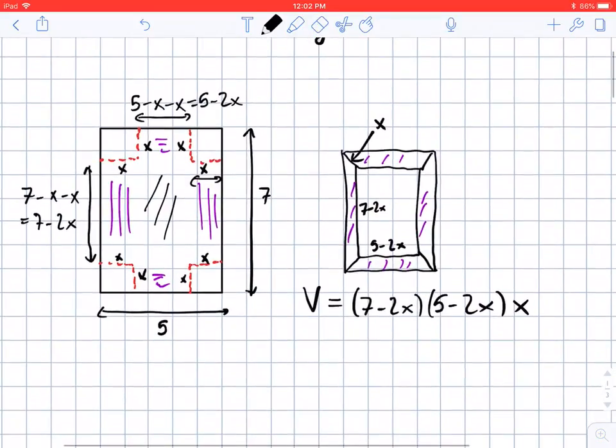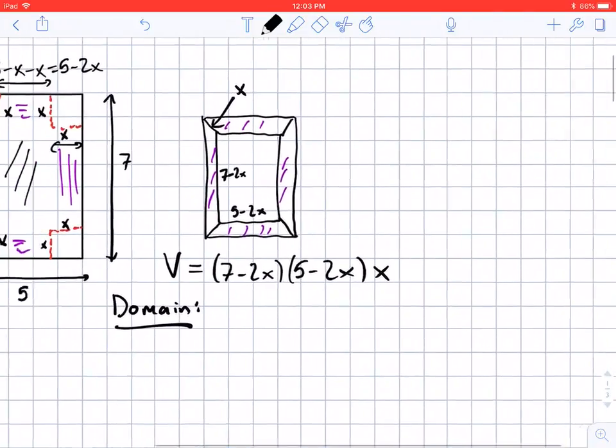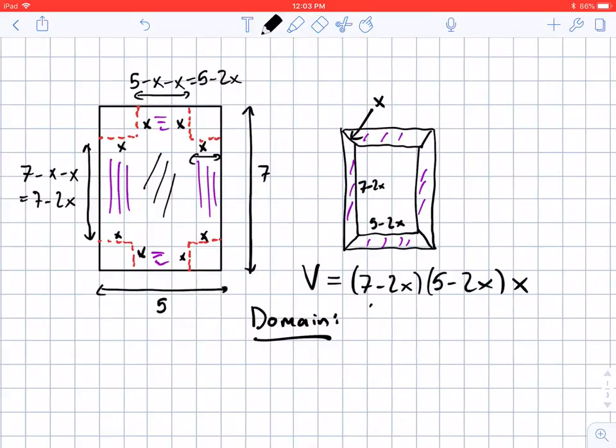Before we graph this let's make a quick note about the domain of this function. We note if I don't cut a corner out then there's no way for me to fold this up into the box without overlapping things. I'm not allowed for X to be 0 because then I really won't get a box. I need my X to start at greater than 0.